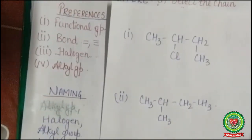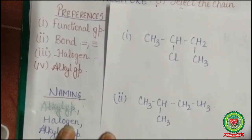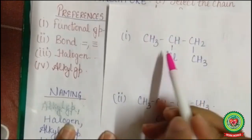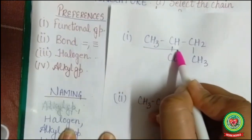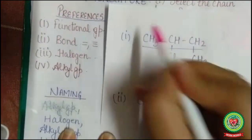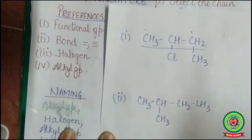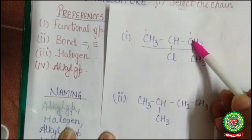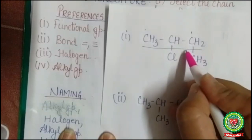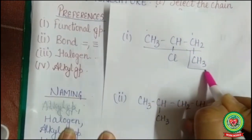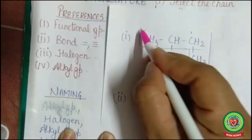Now we will do the first example related to nomenclature. First of all we have to select the longest chain. The chain must always be in a straight state — this is my first carbon and this is my last carbon. If a carbon is attached to the last carbon, it is part of the chain. So this will be my chain selection.